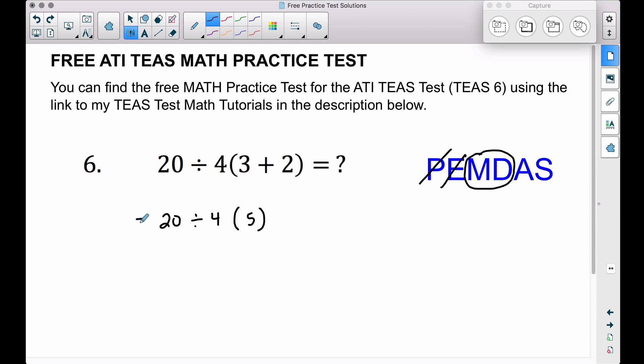So what we want to do here, we either multiply or divide from left to right, whichever one comes first. Since division comes first, we want to divide 20 divided by 4, gives us 5. Let's bring this one down, and finally let's go ahead and multiply these together to get 25. That is our answer to this problem.